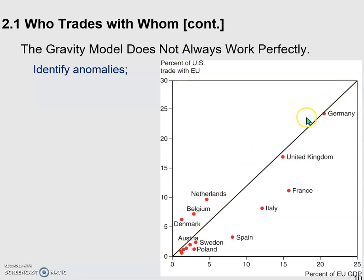Previously, we said there is a very strong positive correlation between these two, which tells us size matters — which is exactly what the gravity model tells us. However, when we take a closer look at these economies along the trend line or regression line, we may find something interesting.